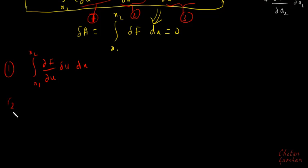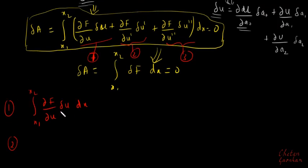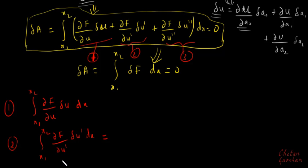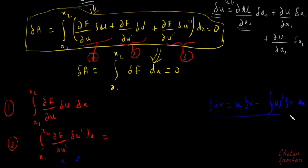Then our second integral is the integral from x1 to x2 of ∂f/∂u' times δu' dx. We can integrate this further using integration by parts. Recall that the integration by parts formula is: ∫u·v = u·∫v − ∫(derivative of u · ∫v) dx.